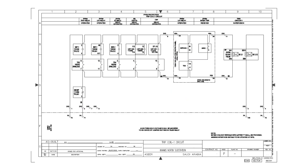This is the Trip Coil 1 circuit. This is the main positive and this is the return for the tripping signal. We have many tripping options here — for example, 94 self-trip relays, 86 lockout relays, 85R, and some other trips available.